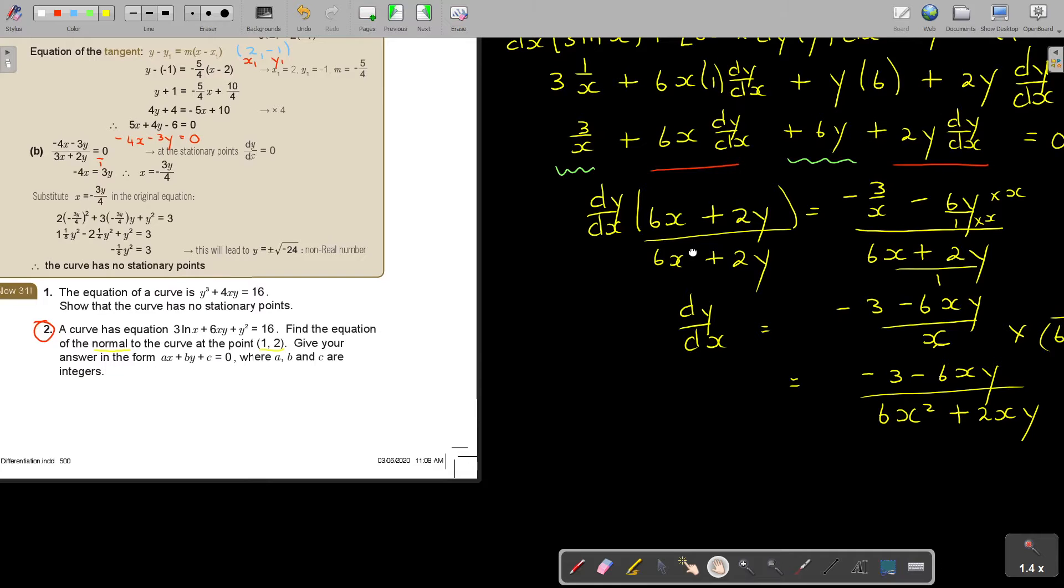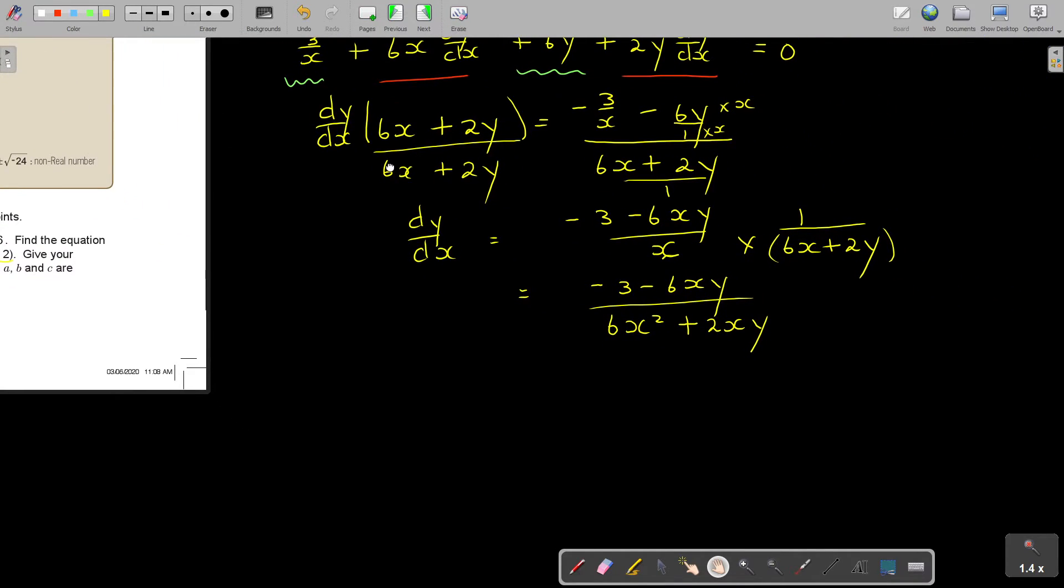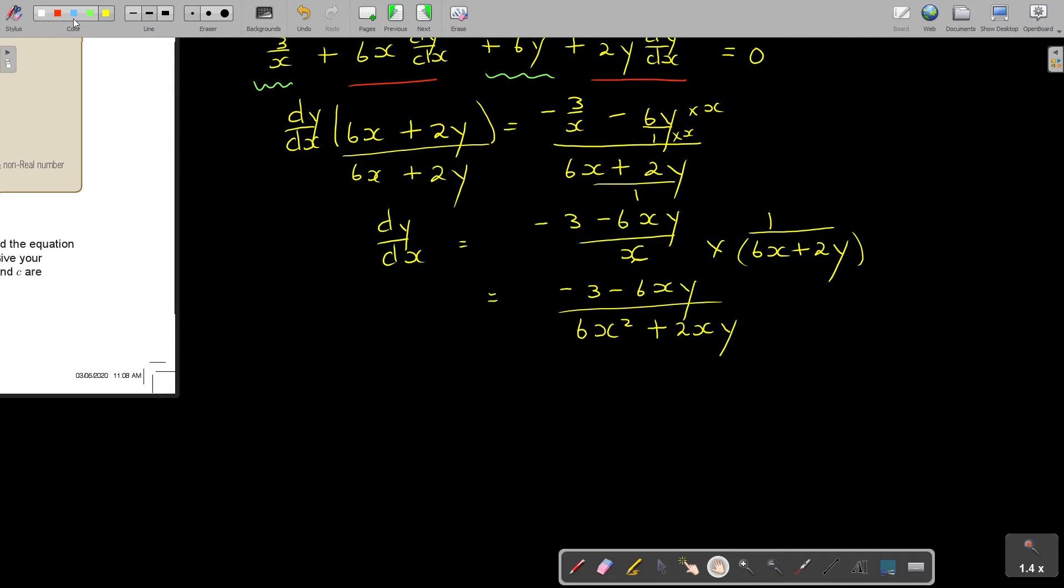Now this is my differentiated equation. Let's go on. Find the equation of the normal to the curve. First we're going to find the gradient at (1, 2). We're first going to find the gradient of the tangent, not the normal. Remember, the normal and tangent is perpendicular. That means they intersect at 90 degrees.